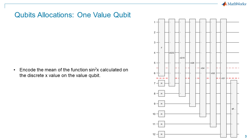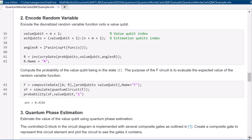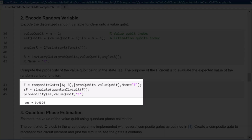In the second step we encode the mean of the function sine squared x, calculated on the discrete x values, onto the value qubit. To compute the mean of this function you need to sample this value qubit and find its probability of being in state 1. Speedup can be obtained by applying the algorithm for amplitude estimation and using additional qubits to store the result. Here we encode the function value of 0.4326 on the value qubit, which is the sixth qubit in our circuit. We append all gate operations to call it the F circuit, and cross-verify by computing the probability of the value qubit being in state 1, which outputs the discrete mean as expected.